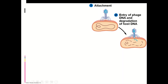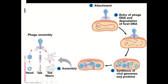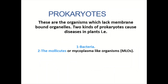The phage DNA enters into the bacterial cells. After attachment, synthesis of viral genomes and proteins takes place. In the next step, the assembly of the different components — head, tail, tail fibers, and capsid — takes place in phage assembly. After assembly, lysis of the bacterial cells takes place, and dispersal of the viral molecules occurs.